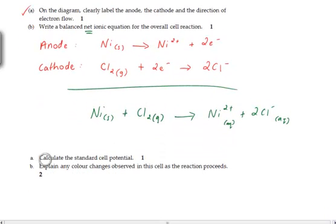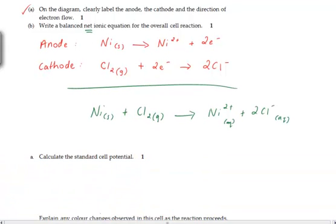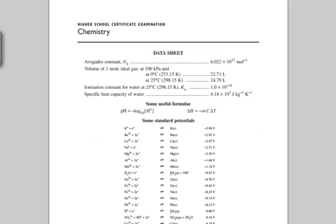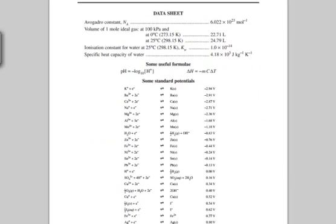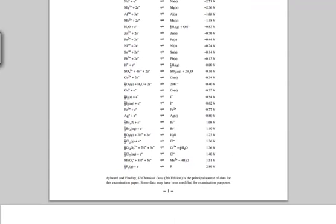Calculate the standard potential is the next question, and that's worth one mark. Now, to do this, we simply look at our two half equations and work out what the half cell potential will be, and we add the two up. So looking at an anode, which is the oxidation of nickel, we have to flip to our potential table, which you will receive in the HSC, and you look for the relevant equation. Now, here it is, here we've got nickel two plus, plus two electrons goes to nickel solid.